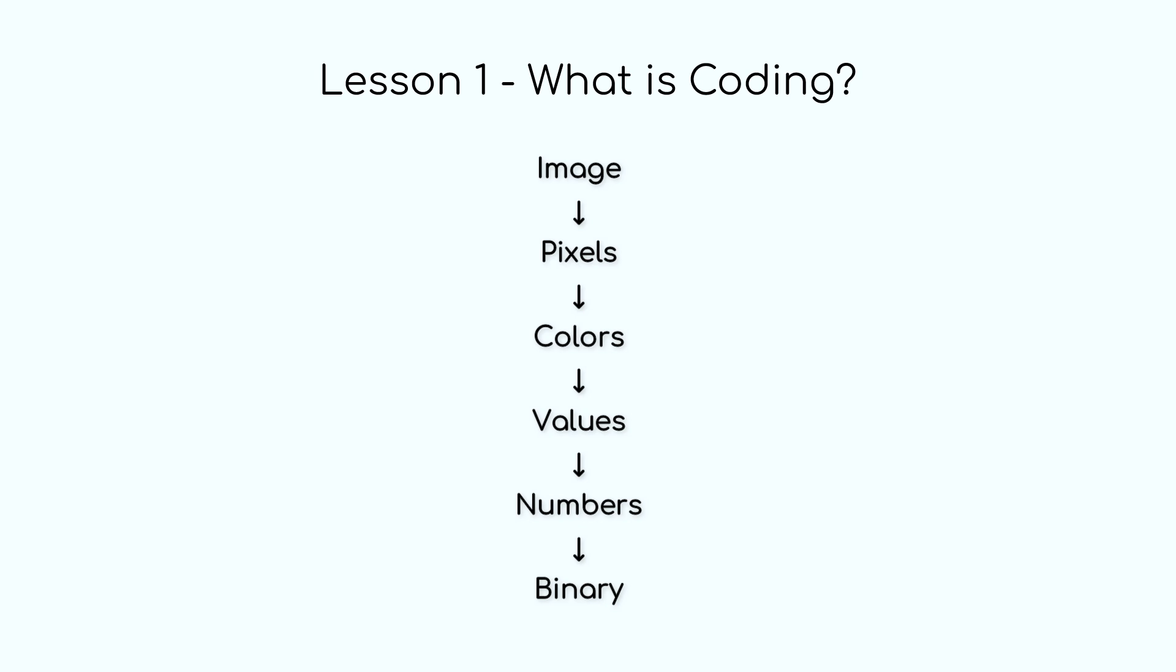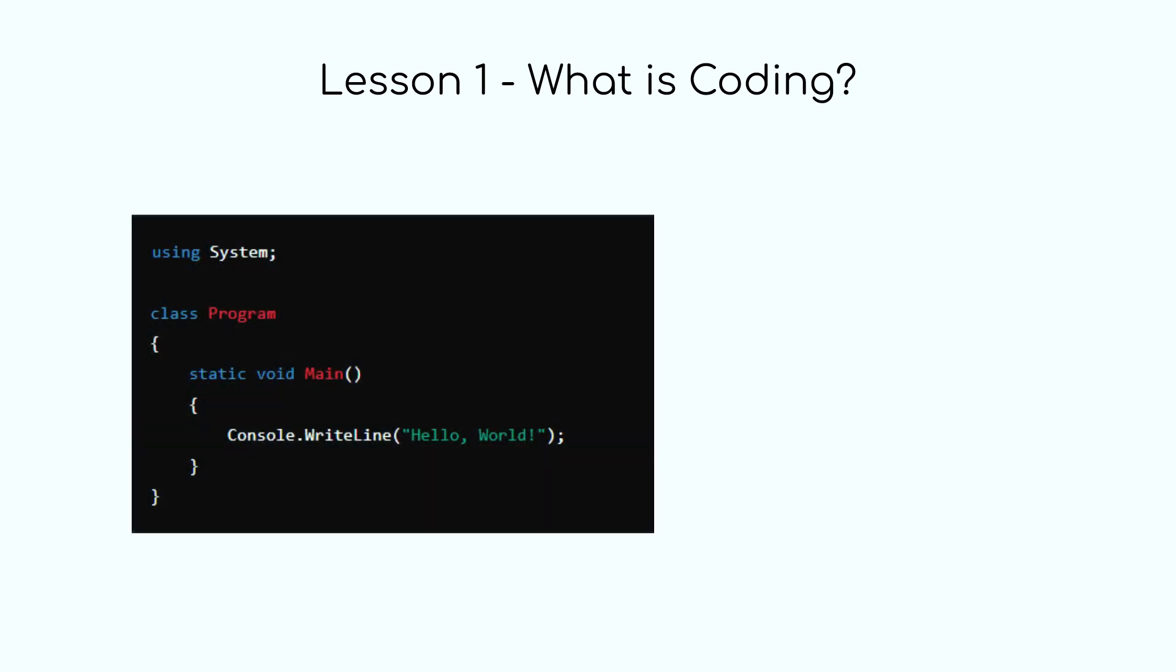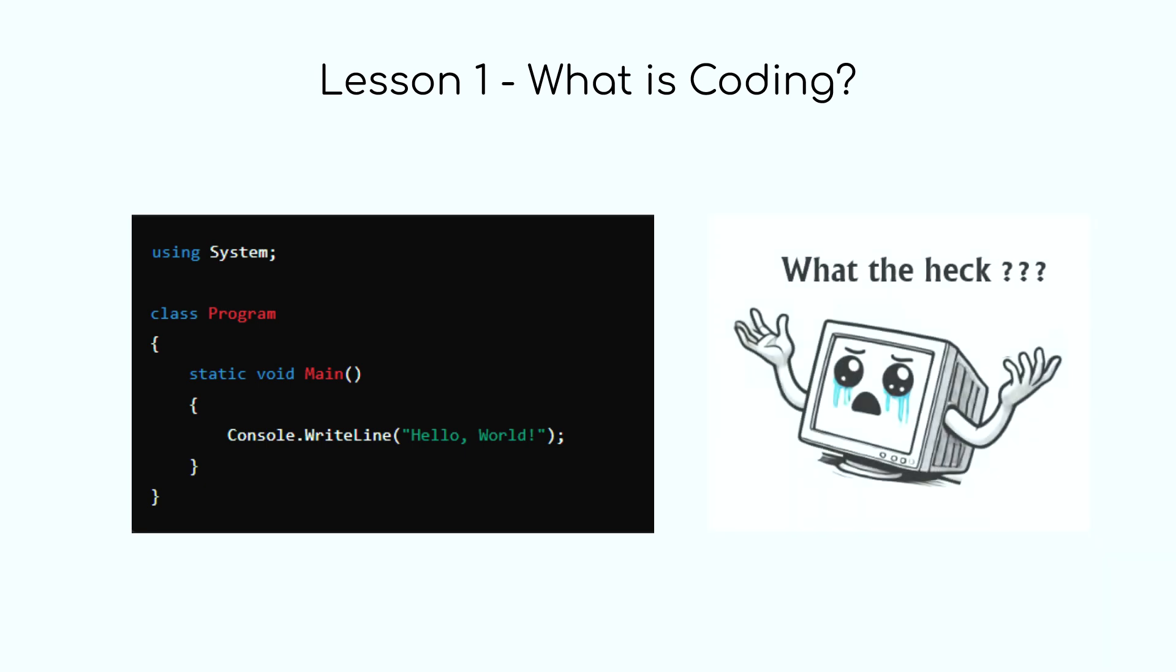So when we write code, we're essentially creating a set of instructions for the computer. But how does the computer actually process these instructions? When you write code in a language like C-Sharp, it's not immediately understandable by the computer, because the computer only understands binary. While C-Sharp is a programming language, it is still a language that is only understandable by humans. So we need something to translate our human code into machine code or into binary code.